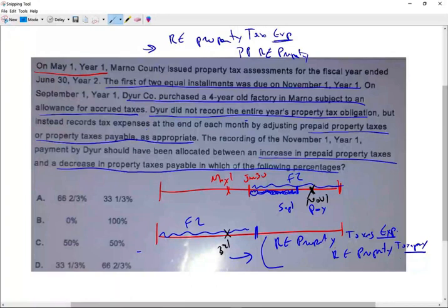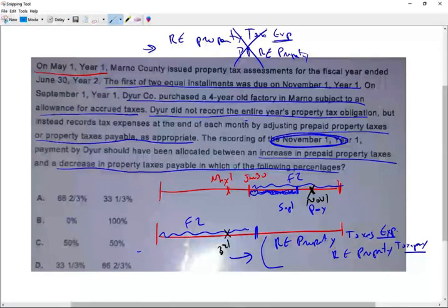And here, what they told us, they told us we made the payment November 1st. It means we don't have, so forget about this entry. We did not, we were not prepaid.